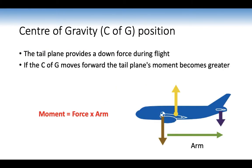Centre of gravity position: the tail plane provides a downforce during flight. If the centre of gravity moves forward, the tail plane's moment becomes greater. In terms of moment and weight, when you increase the arm, the weight of the tail plane stays the same but the moment increases.